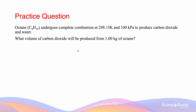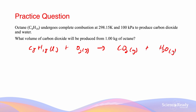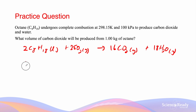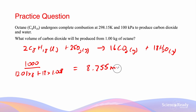This is a complete combustion reaction producing only CO₂ and water. The equation is: C₈H₁₈(l) + O₂(g) → CO₂(g) + H₂O(g). Balancing gives: 2C₈H₁₈ + 25O₂ → 16CO₂ + 18H₂O. The mass of octane is 1 kg = 1000 g. Using n = m/M: n = 1000 / (12.01×8 + 1.008×18) = 8.755 moles of octane.